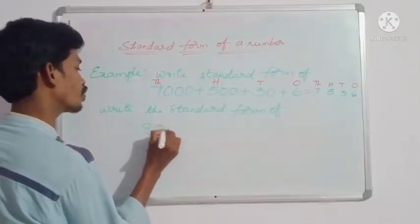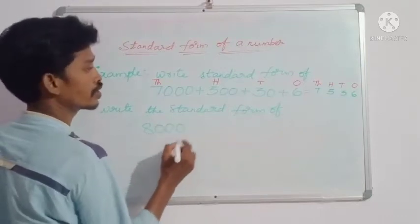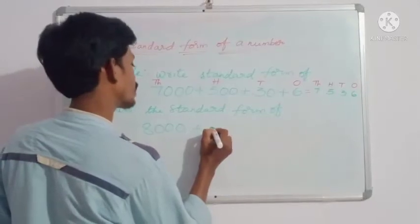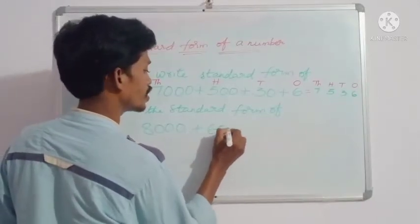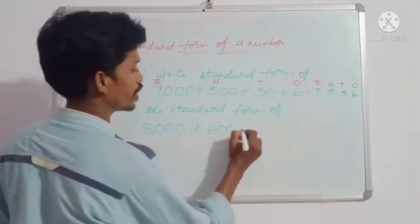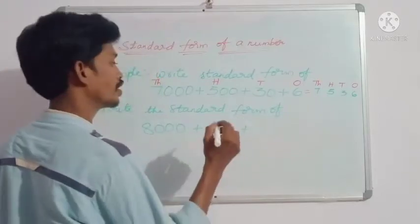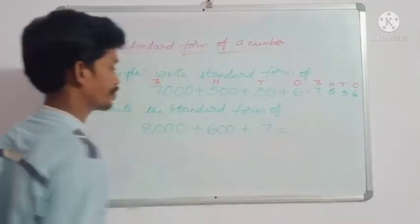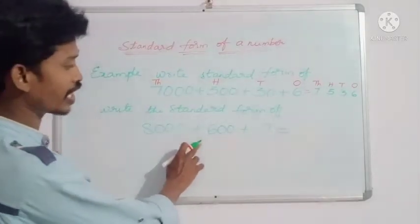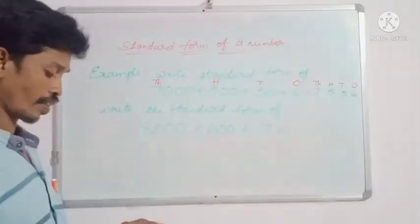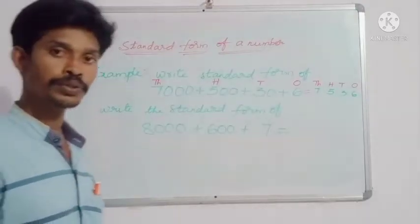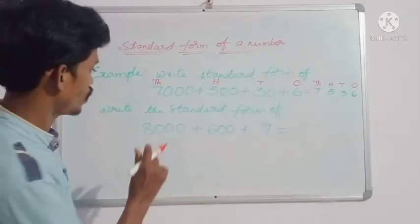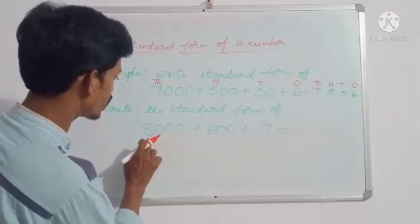Write the standard form of 8000 plus 600 plus 7. First, what you have to do? You have to find the places: ones, tens, hundreds, thousands.